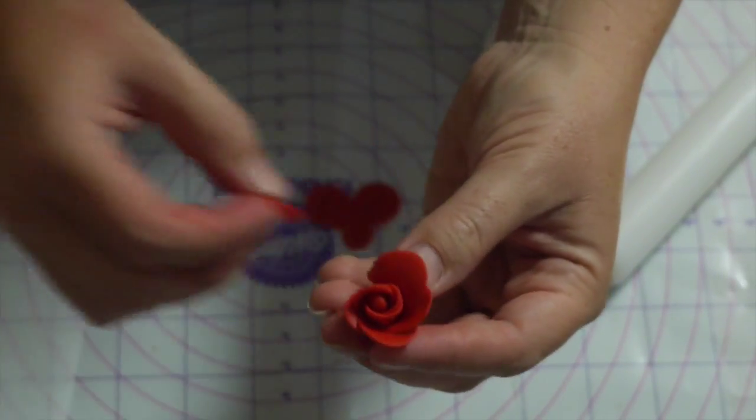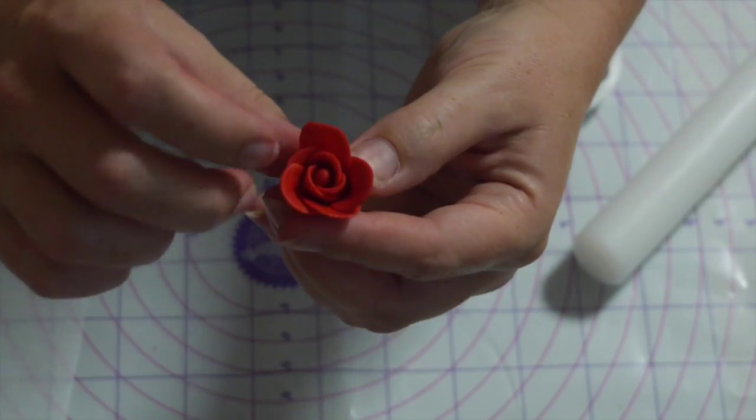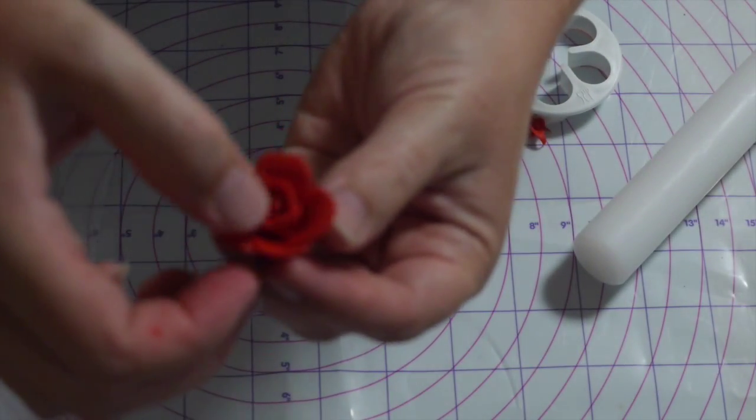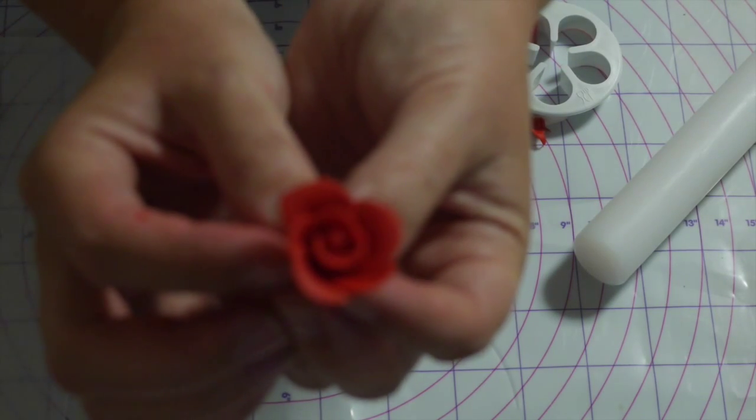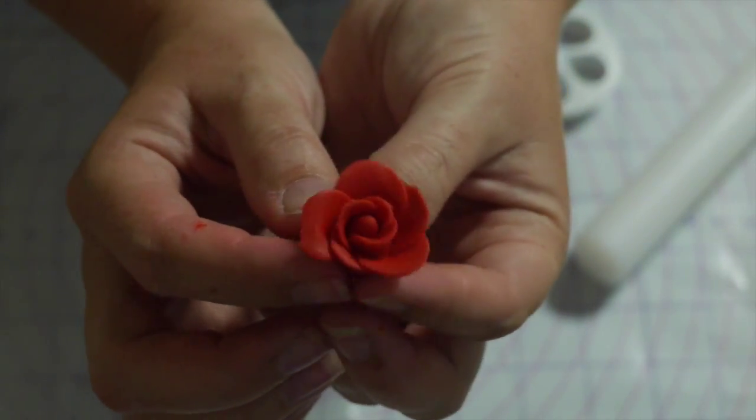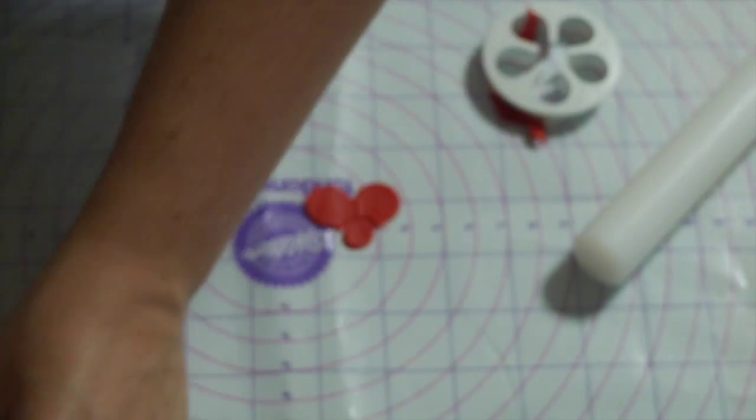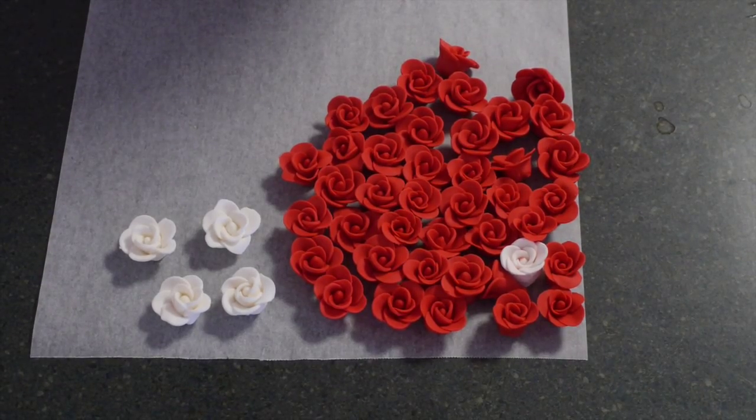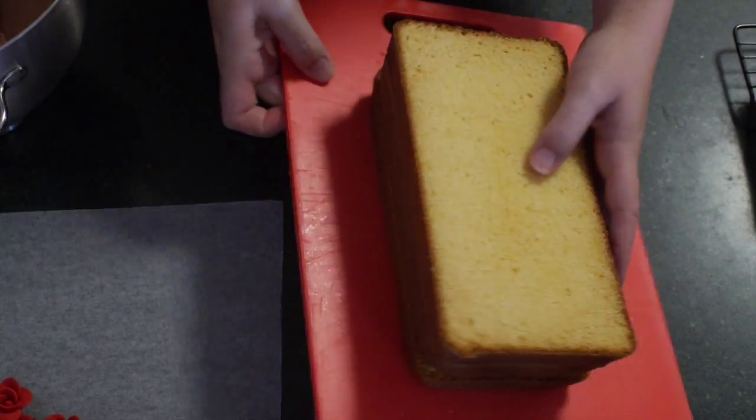Just continuing to do this for about 50 roses. You will see on the cake I also threw in a couple of white ones just to break up the box. I thought it added a little bit of interest. So instead of just being all red roses I just did five white ones just to spread out over the top of the cake. Then you're going to want to leave them overnight to dry.